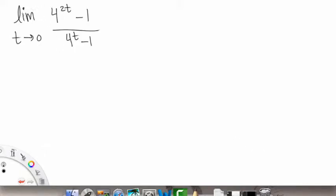Alrighty, so this problem tells us to compute the limit as t goes to 0 of 4 to the 2t minus 1 over 4 to the t minus 1.